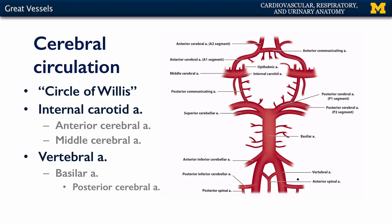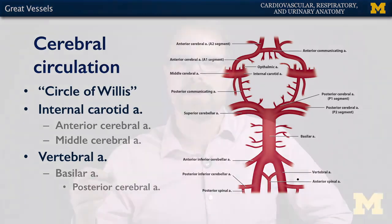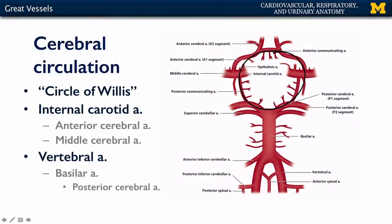It's interesting — most estimates put only about a third of the population as having a complete circle of Willis, whereas the remainder have some variation. They might be missing a posterior communicating artery, or an anterior communicating artery. Whatever it is, the circle is incomplete all the way around.